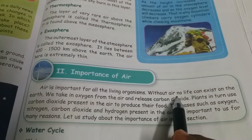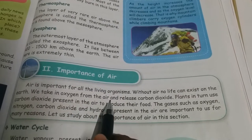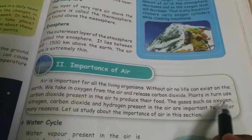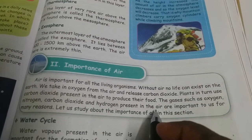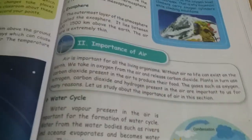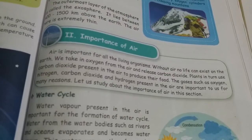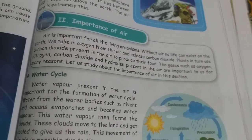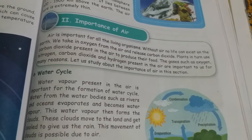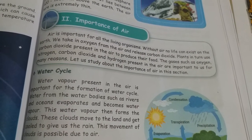Air is important for all living organisms. Without air, no life can exist on earth. We take in oxygen from the air and release carbon dioxide. Plants use the carbon dioxide present in the air to produce their food. The gases — oxygen, nitrogen, carbon dioxide, and hydrogen — present in the air are important to us for many reasons. One important role is the water cycle: water vapor present in the air is important for the formation of the water cycle.